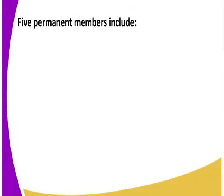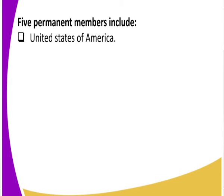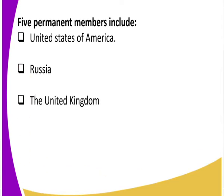Now let us look at the permanent members. We have: the United States of America, Russia, the United Kingdom, France, and China. So the five permanent members are the United States of America, Russia, the United Kingdom, France, and China.